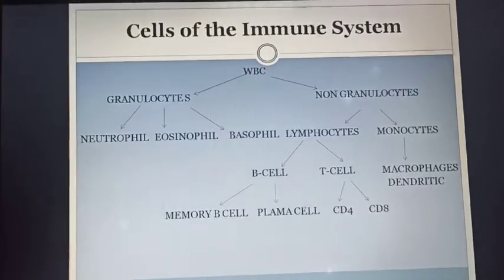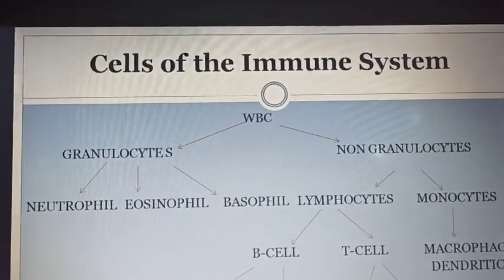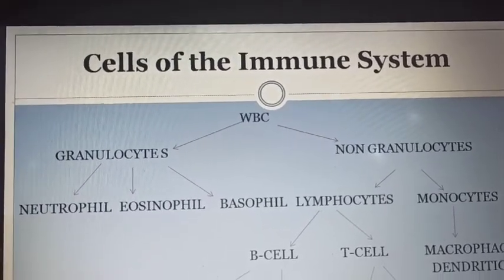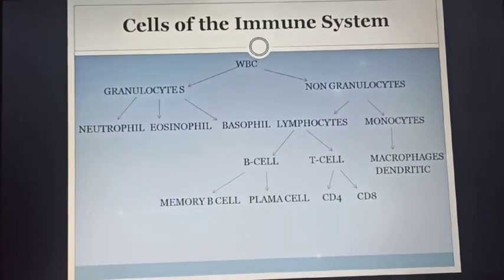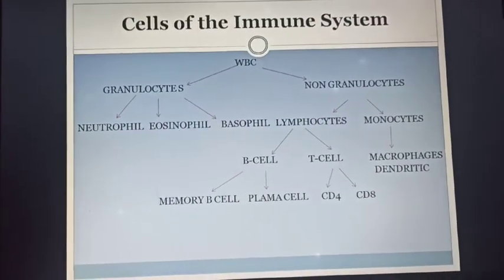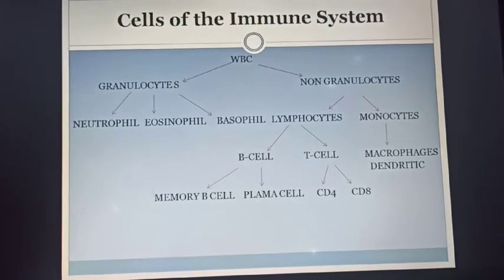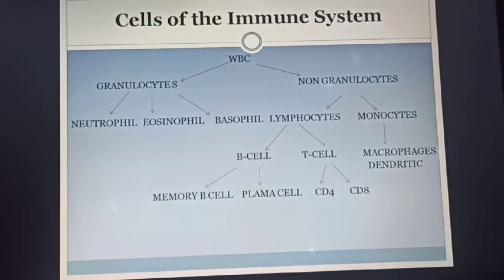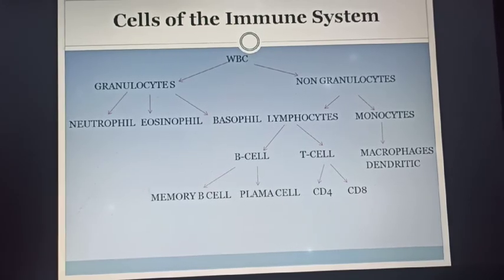Next is WBC, which means white blood cells, also known as leukocytes. WBC is of two types: the first one is granulocytes and the next one is agranulocytes. Those WBC which have specific granules are known as granulocytes, and those WBC which don't have any specific granules are known as agranulocytes.